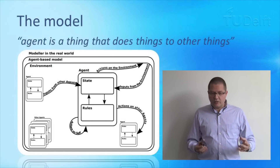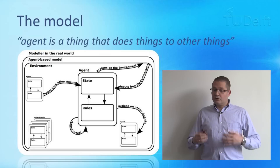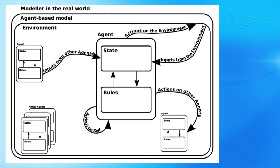We sometimes say that an agent is a thing that does things to other things. In the middle there is the agent — an entity, a thing that knows things and does things. This thing is situated in some kind of environment where there are other agents, inside a model that we as modelers have chosen and drawn boundaries around. Following inputs from others, from the environment, and from their own behaviors, they will make decisions and perform actions. These actions can affect themselves, the environment, or other agents — and through indirect interaction throughout the environment, the true complexity of the system arises.